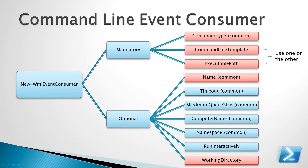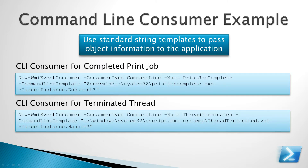Next we have the command line event consumer class. There are several mandatory and optional parameters for this cmdlet. For the command line event consumer you're going to use either the command line template or the executable path parameter to specify the command line that you would like to run. Microsoft recommends that you use the executable path parameter. In the example, we use new WMI event consumer, give it a command line consumer type, give it a friendly name, and the command line template will be the path to our executable. We can also pass parameters to that executable using WMI standard string templates, which we'll cover more in a different module.